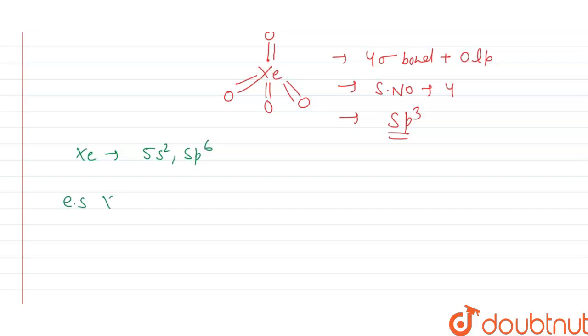In the excited state, the electronic configuration of xenon will be: the 5s orbital contains 1 electron, the three 5p orbitals also contain one electron each, and the remaining electrons jump to the 5d orbitals. This is the excited state electronic configuration.